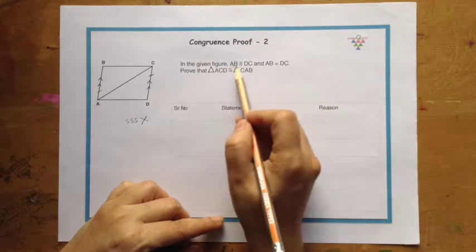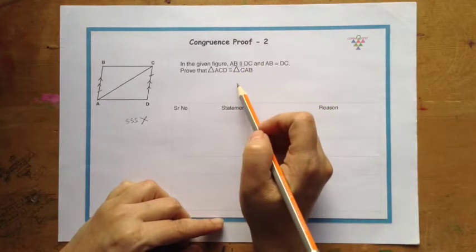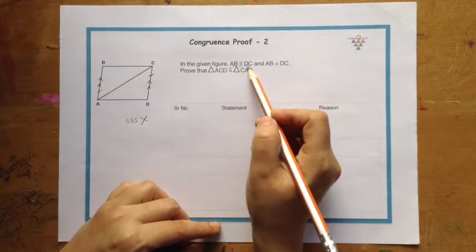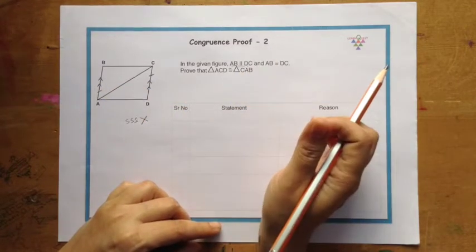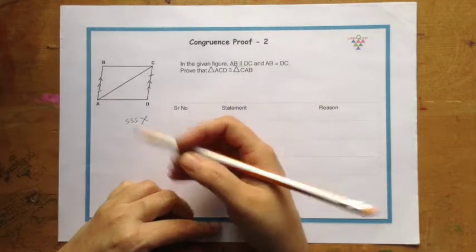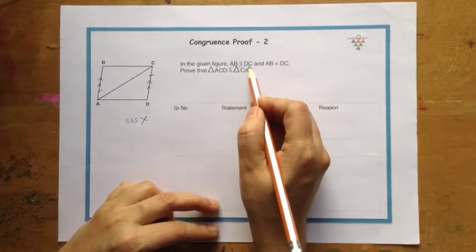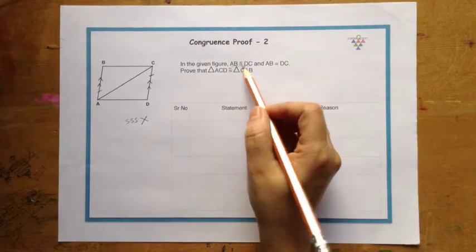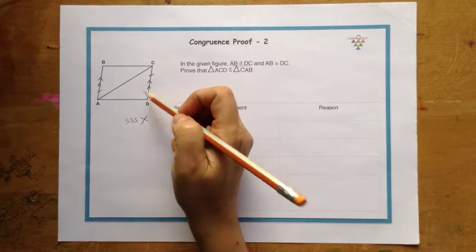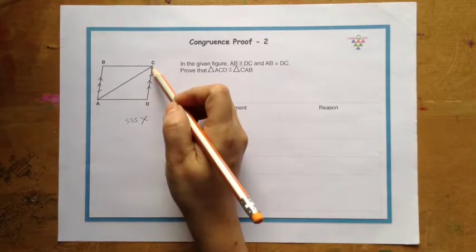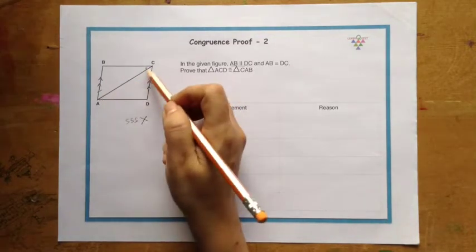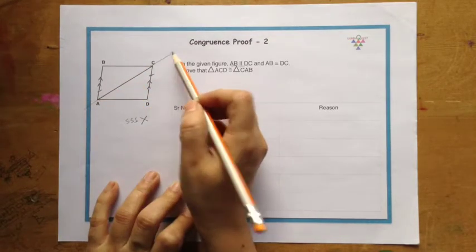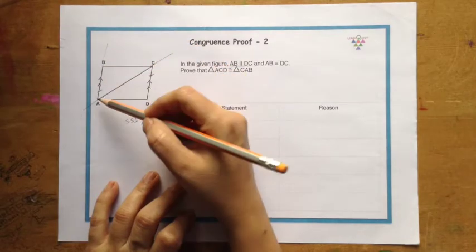But something is given, we are given that AB is parallel to DC. Now whenever something is given, it is given for a reason. It is so that we can make use of this property for proving this. Now we know that when two lines are parallel, this will become the transversal. AC is the transversal, let me just extend it slightly and these are the parallel lines.